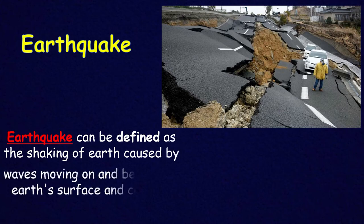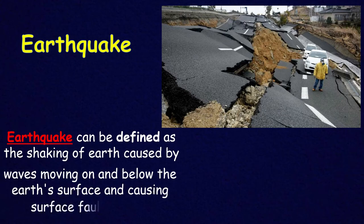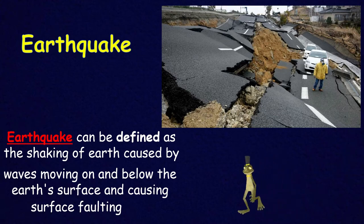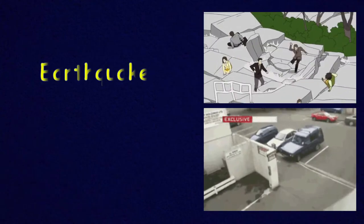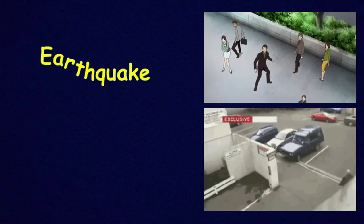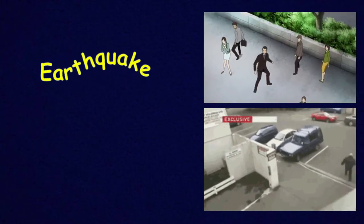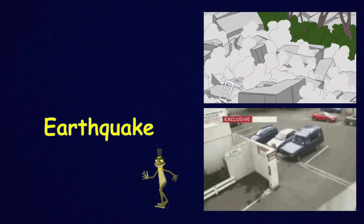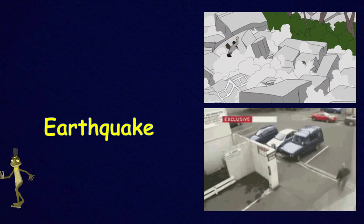An earthquake can be defined as the shaking of the earth caused by waves moving on and below the earth's surface, causing surface faulting. It usually triggers violent ground movement, landslides, tsunami, and a lot of damage. I don't like earthquakes — it's so scary, and I'm sure it is for you too.